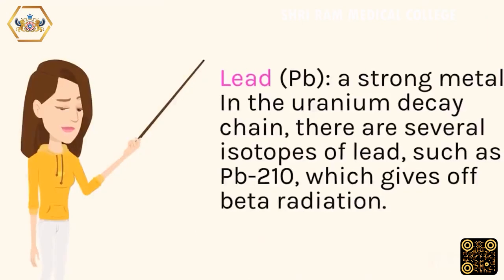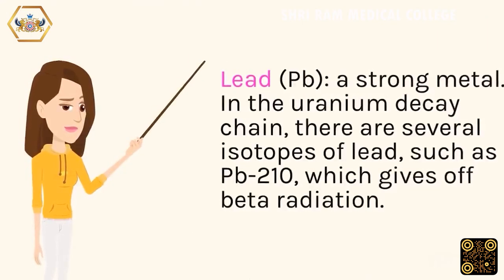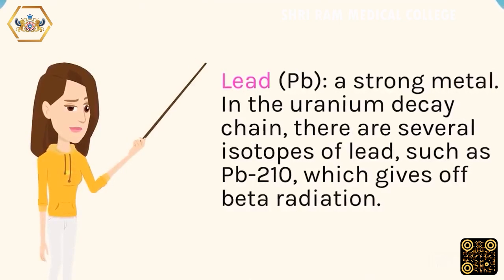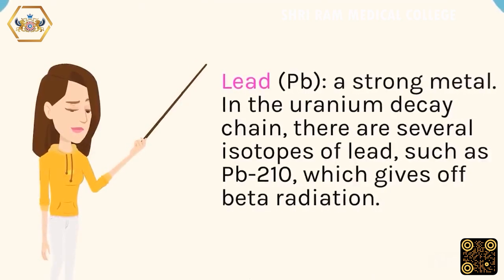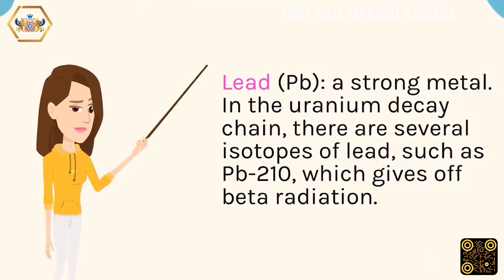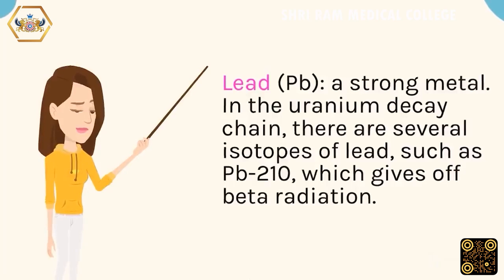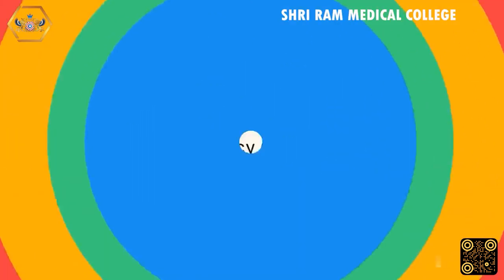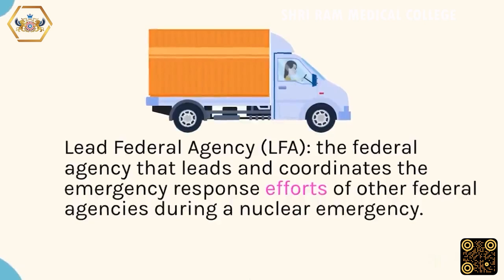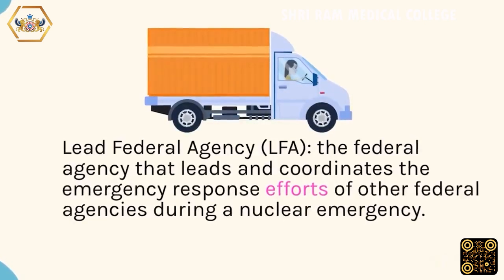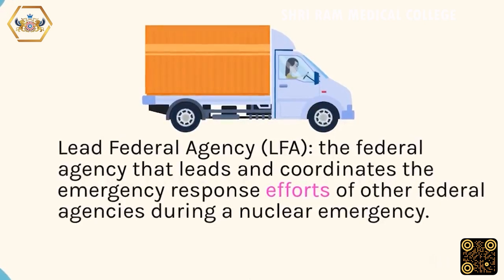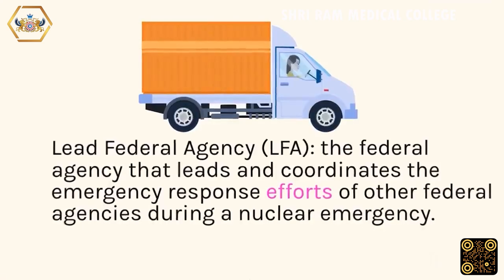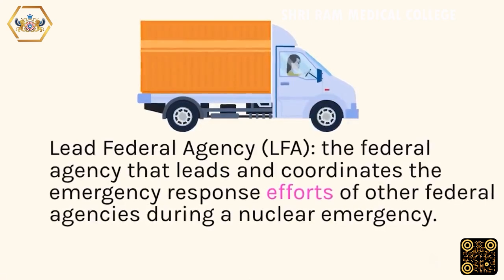Lead (Pb): a strong metal. In the uranium decay chain, there are several isotopes of lead, such as Pb-210, which gives off beta radiation. Lead Federal Agency (LFA): the federal agency that leads and coordinates the emergency response efforts of other federal agencies during a nuclear emergency.